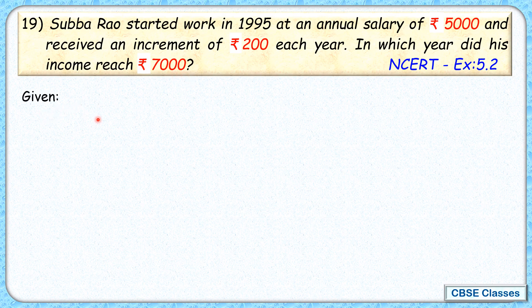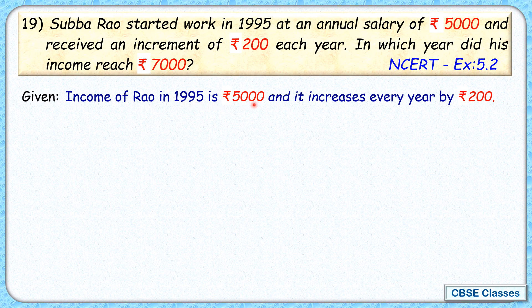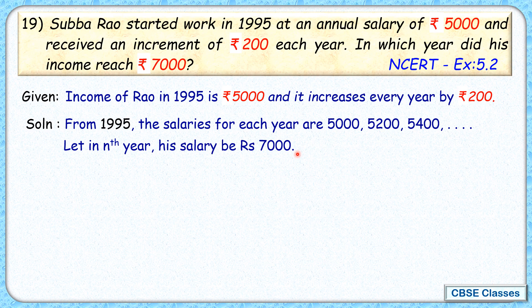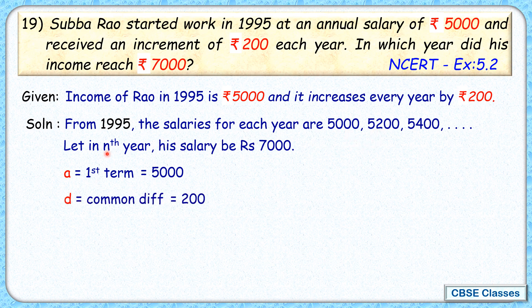We start with the given part. His salary in 1995 is Rs. 5,000, next year Rs. 5,200, then Rs. 5,400, and so on. We assume that the Nth term is Rs. 7,000 and find the value of N. So in this AP, the first term A is Rs. 5,000, the common difference D is Rs. 200, and TN, the Nth term, is Rs. 7,000.